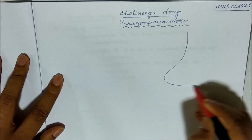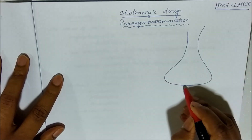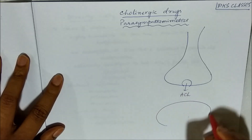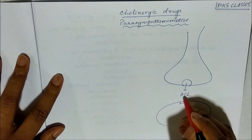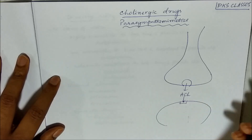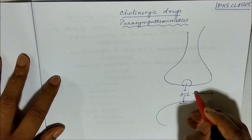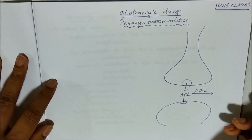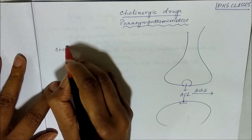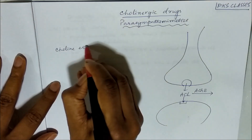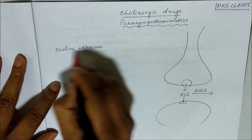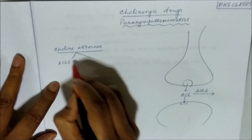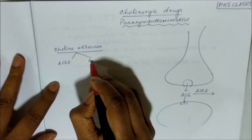The neurotransmitter released here is acetylcholine, and acetylcholine then acts on the postsynaptic receptors to show its action. Acetylcholine is degraded by the enzyme acetylcholinesterase. This cholinesterase enzyme is of two types: one is acetylcholinesterase and the other is butyrylcholinesterase.